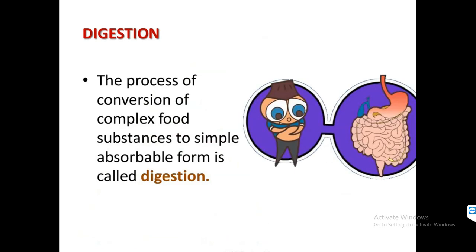What is digestion? Digestion is the process of conversion of complex food substances to simple, easily absorbable forms. Carbohydrate is complex food and it has to be broken down into glucose. Glucose is the single unit of carbohydrate that our body digests and utilizes for its day-to-day activities. Complete carbohydrate has a very complex structure and our body cannot use it directly. That's why breaking down of complex materials is required for use by our body.